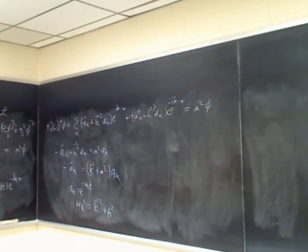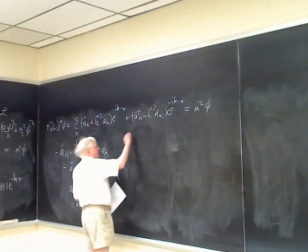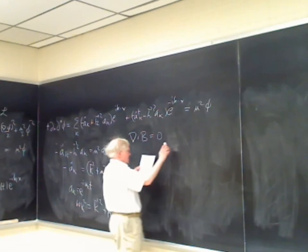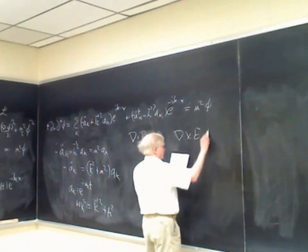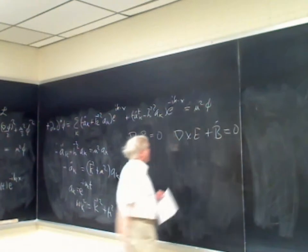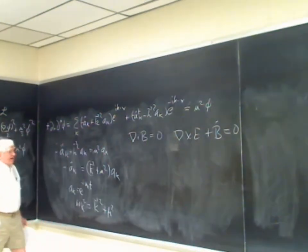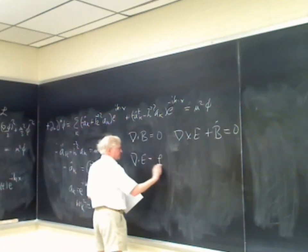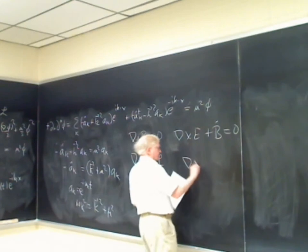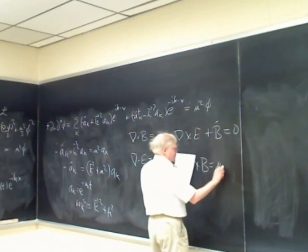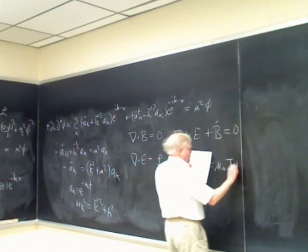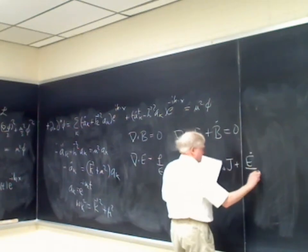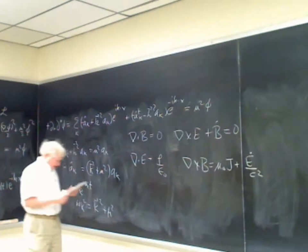Now we're going to apply this approach to electrodynamics, which is more complicated. We start with Maxwell's equations in SI units. There are two homogeneous equations and two inhomogeneous equations, including ∇×B = μ₀J + Ė/c².